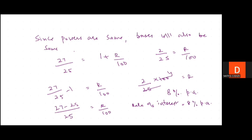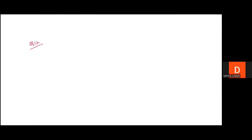Now, coming to question number 12. Question 12 says: At what rate percent per annum will rupees 4,800 yield an interest of rupees 747 in 2 years, compounded annually?